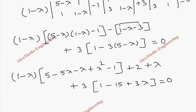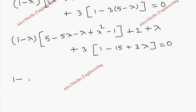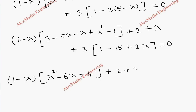Rearranging: we have (1 minus lambda) times (lambda squared minus 6 lambda plus 4), plus 2 plus lambda, then minus 42 plus 9 lambda equal to 0.